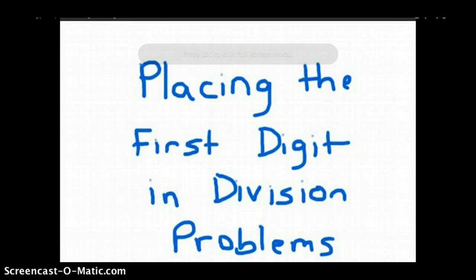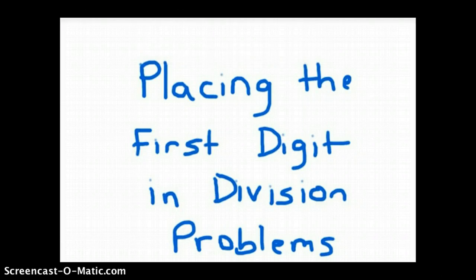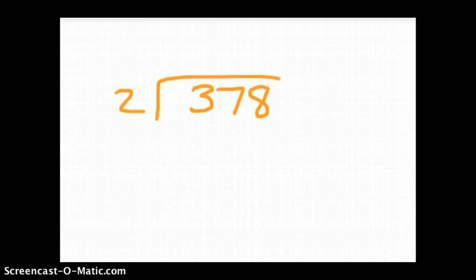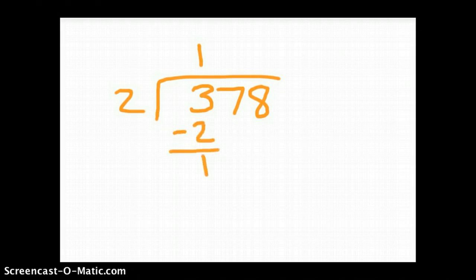Here we're going to look at placing the first digit in division problems. We'll be placing that digit in our quotient or answer. When we have this problem here, 378 divided by 2, we place our digit here because we can divide 3 hundreds by 2. It goes in one time. 1 times 2 is 2. 3 minus 2 is 1.